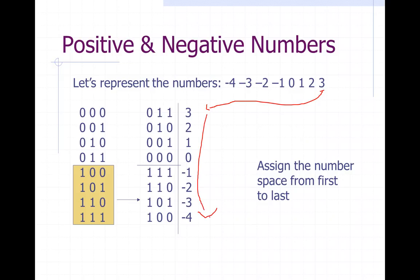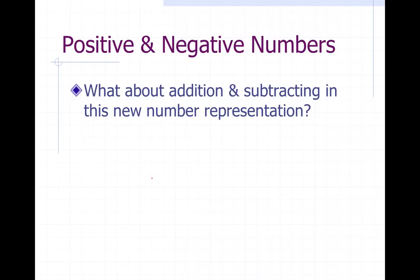Now with those assigned, we start with positive three at the top and follow down with all our assignments. Notice: because we're using positive and negative numbers, one-one-one in a normal sense would equal seven, but in this space — where we represent positive and negative numbers — one-one-one is actually equal to negative one, not seven.